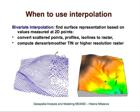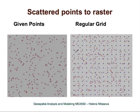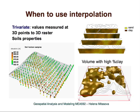Here is an example: we use interpolation to transform a set of points to a surface. We go from scattered or irregularly distributed points to a regular grid, which are the blue points. The red points are the given points and the blue points are the interpolated points.